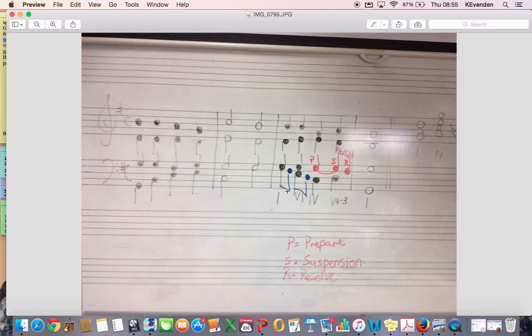And then in blue here, we've got passing note, so that would have got me extra. So really, obviously my chords are all correct, but to get my full 2 out of 2 for style, I've got 3 options. I've got this 4-3 suspension here, and then I've got 2 passing notes.